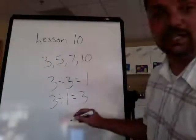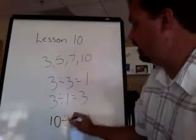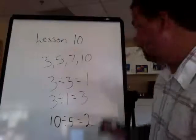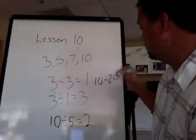And the number 10 can be divided by several different numbers. 10 divided by 5 equals 2, or we can divide 10 divided by 2 equals 5.